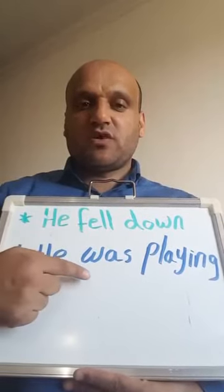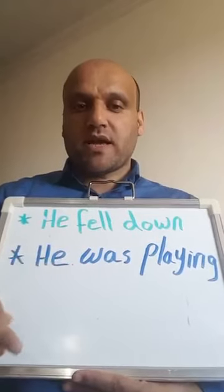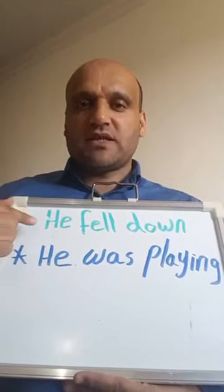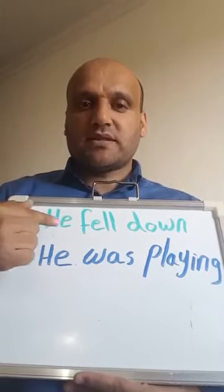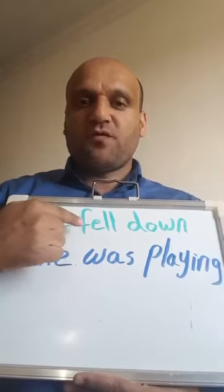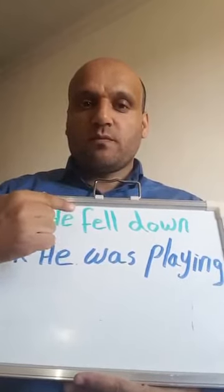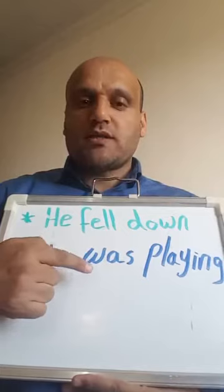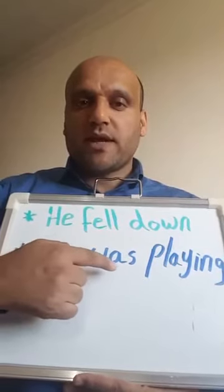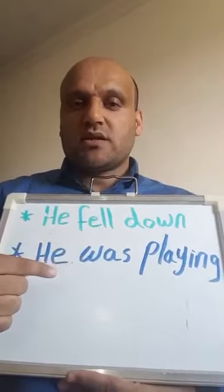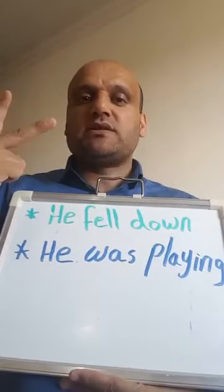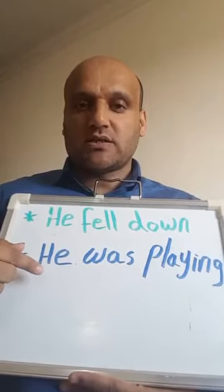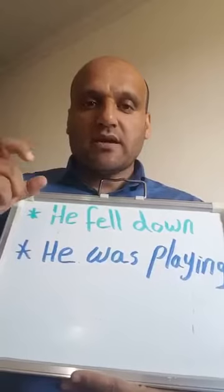The verb in the second sentence is 'was playing.' When we look at the verb, we know that the first sentence is in past simple, because 'fell' is the past form of the verb 'fall.' The second sentence uses 'was playing,' which is past continuous. So we have two different tenses: the first is past simple, the second is past continuous.